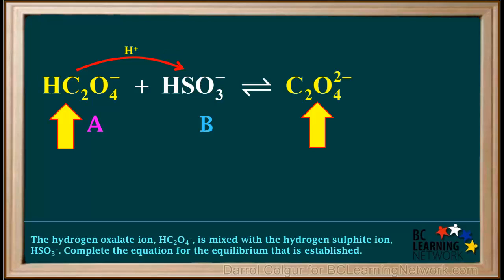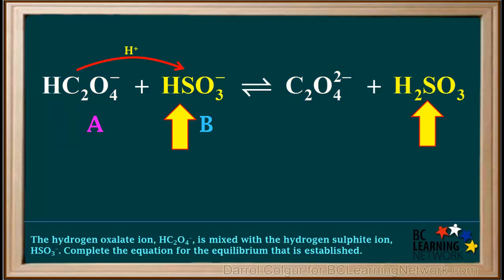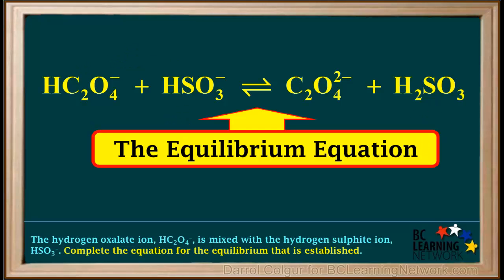Because HC₂O₄⁻ loses a proton, it will form C₂O₄²⁻. And because HSO₃⁻ gains a proton, it will form H₂SO₃. So now we've answered the first question. This is the equilibrium equation.